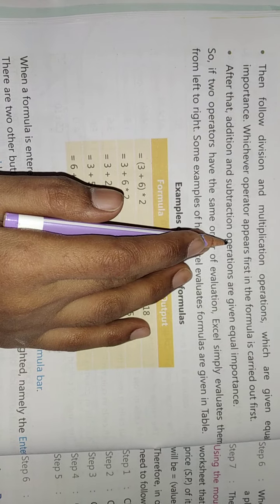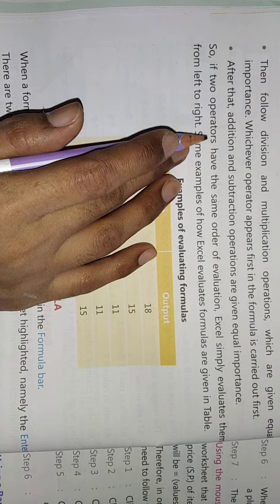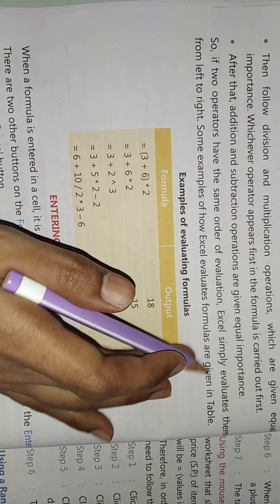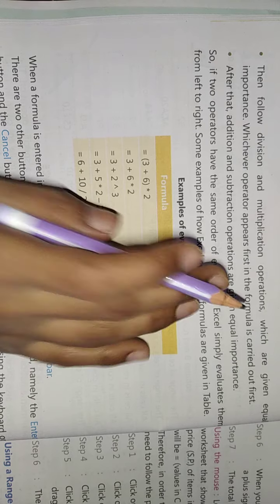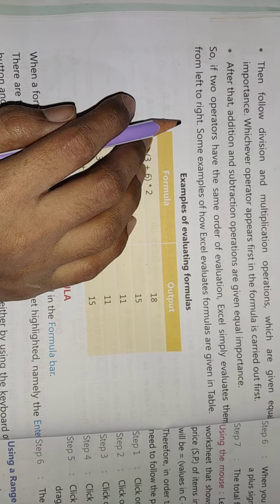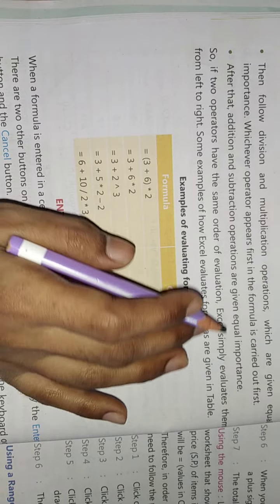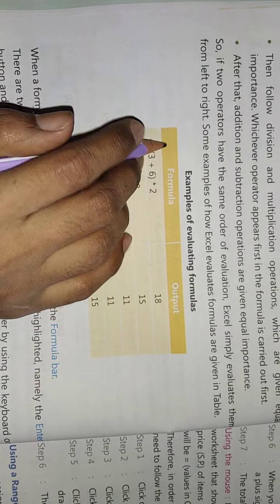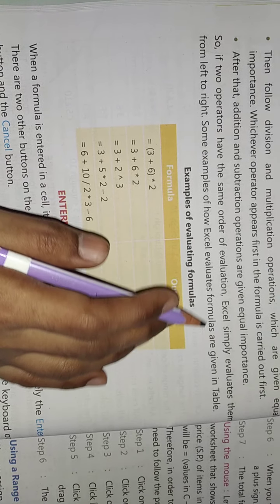After that, we have to do addition and subtraction. If two operators have the same order of evaluation, Excel simply evaluates them from left to right. We will perform some examples of Excel evaluation formulas.